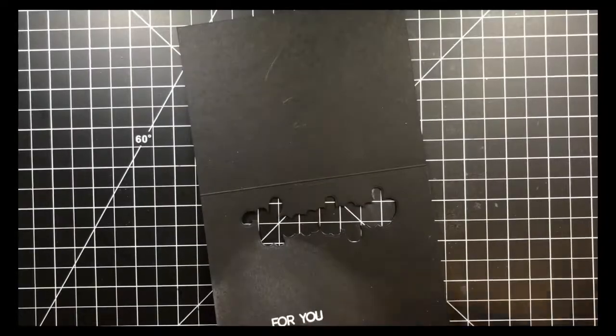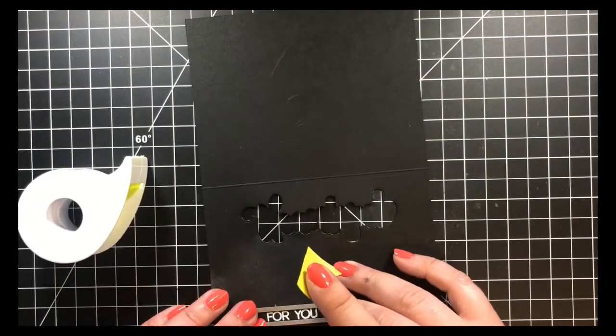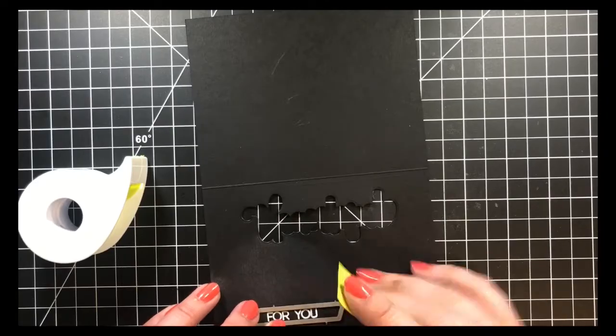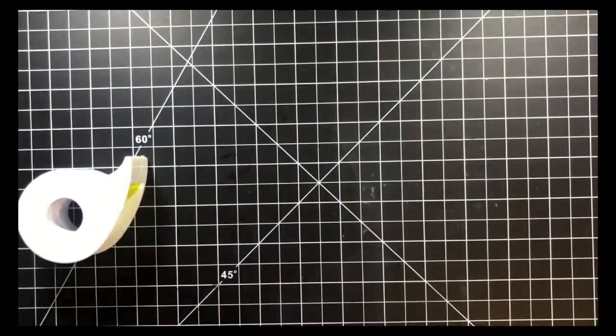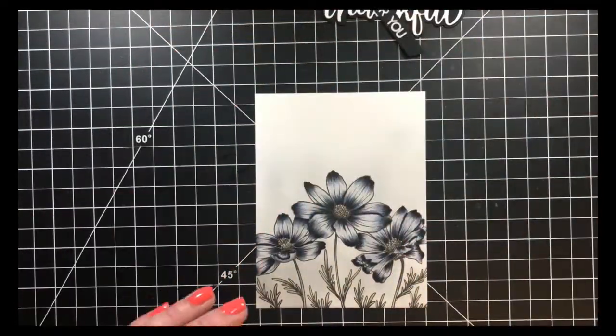Usually when I run something through my die cutting machine, I use a Gemini. That's why I die cut off camera. It's the full-size Gemini. I use either washi tape or Post-it note tape so that it doesn't move around while going through my die cutting machine. After everything was die cut, I went ahead and adhered that card panel that is just slightly smaller than the card base.